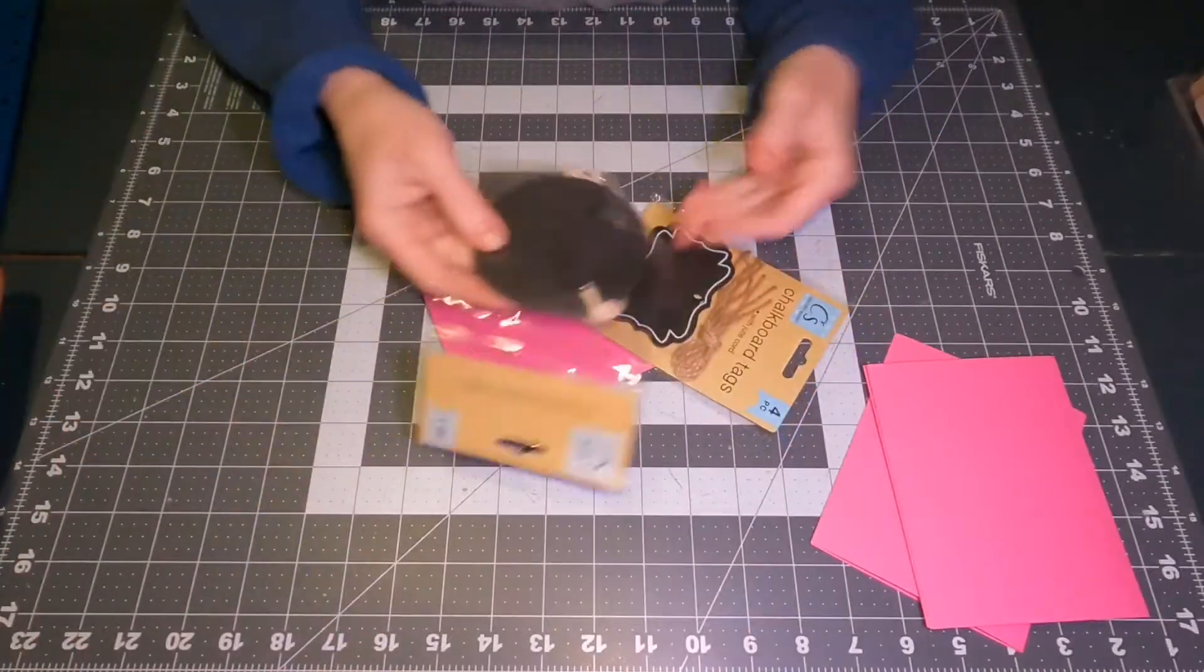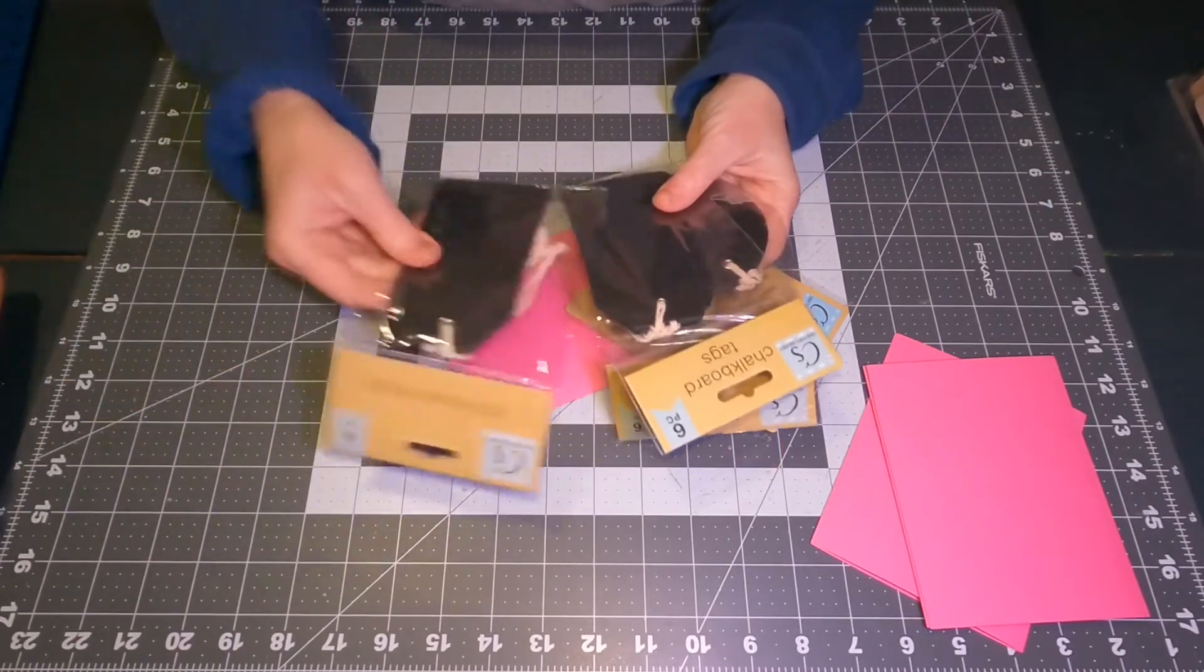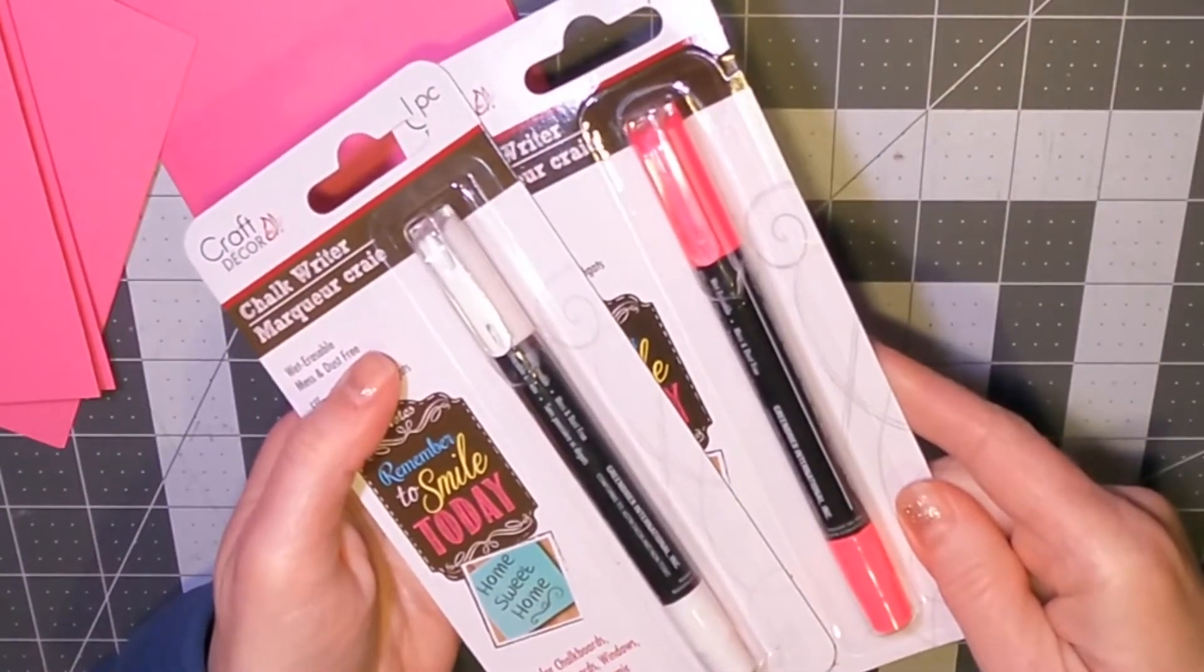You can use whatever you've got, and you can also buy cards, blank cards that are already made in the right size with envelopes. You can buy those at Hobby Lobby and other craft stores.